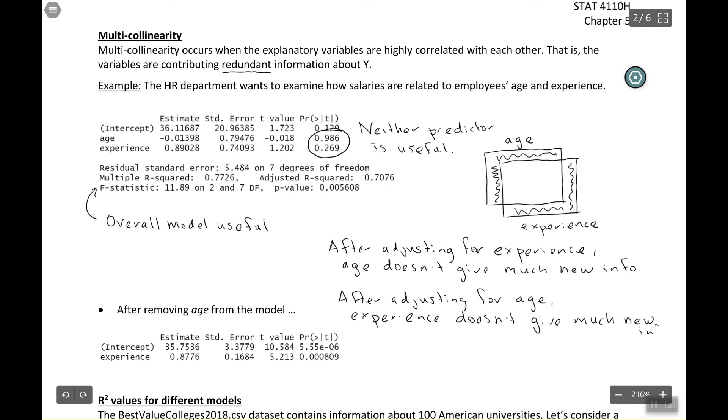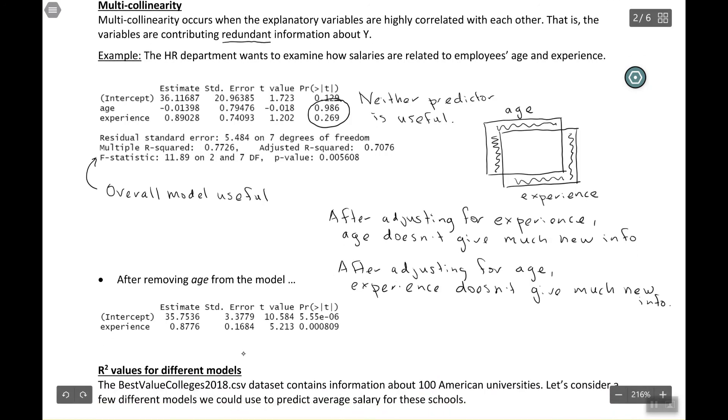So one strategy in this situation is just to remove one of those variables, right? So it seems like they're pretty redundant. We don't need both of them. So we can take age out of the model. Okay, so here we've taken age out of the model and I picked age because that was the larger of the two p-values. But we can see when we take age out of the model and we just look at experience. So on its own, experience is a useful predictor of salary. Experience is a useful predictor of salary because it does have a small p-value, right? It seems like it would be unlikely to get this association just by chance alone.